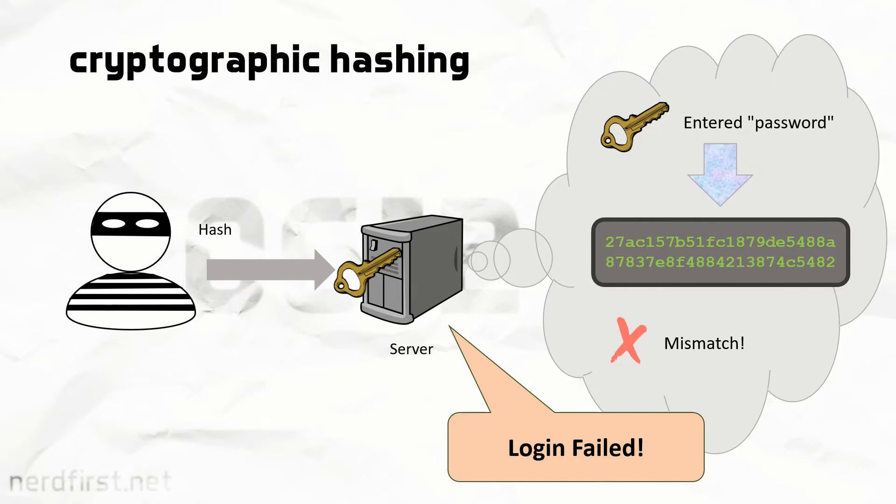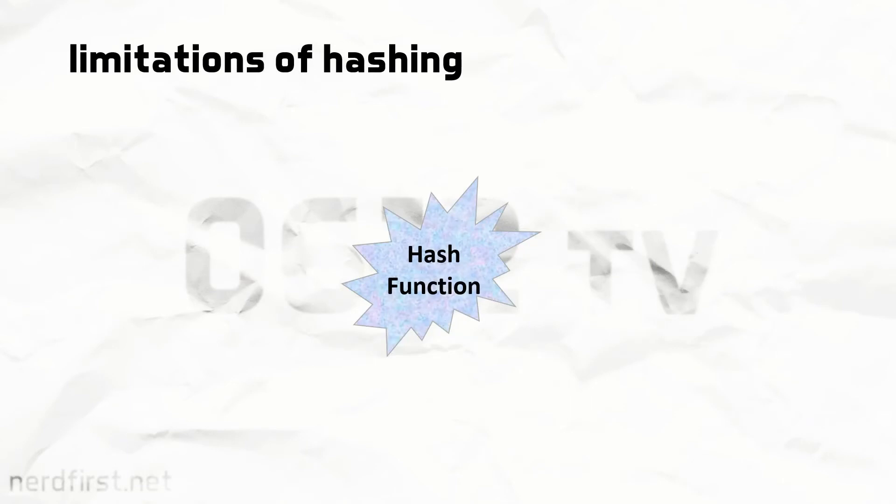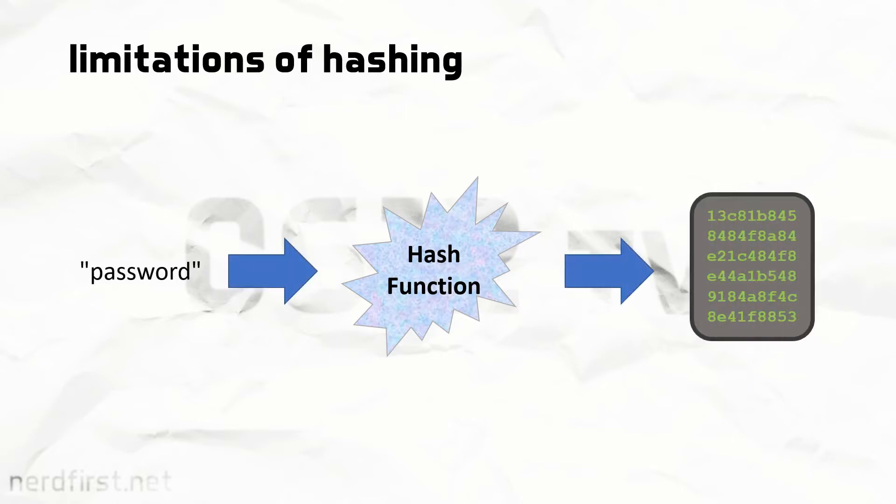Of course, there are certain limitations to all this. Now, our hash function needs to be deterministic. What this means is, if you put in something, it will always give you the same result. This of course is necessary for everything we've described up to this point to work correctly.